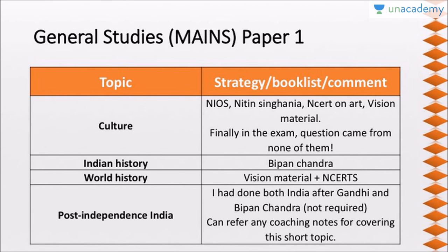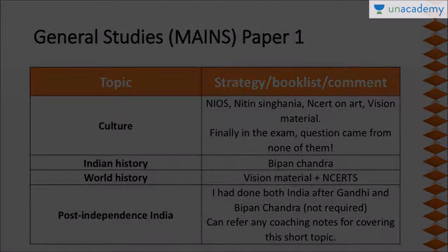For General Studies mains Paper 1 — culture again: I followed five different things, and in the exam questions came from none of them. Please pick and choose — even one source is fine. It is not a very high-yielding topic. For Indian history, again Bipin Chandra. For world history, I did Vision material and NCERTs — even one of them is sufficient. For post-independence India, I did two books, but they are not required — they are more like novels. Any coaching notes for this small topic will suffice; UPSC has not been asking questions about it much.